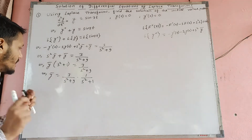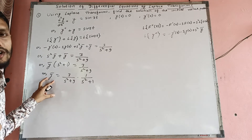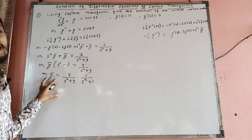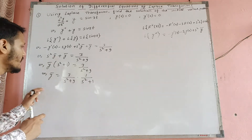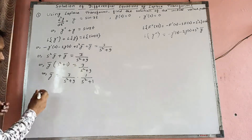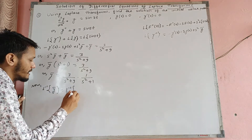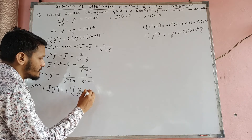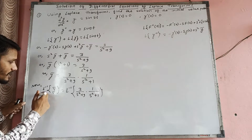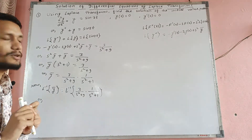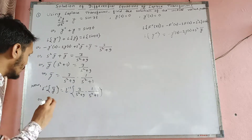So this is the y-bar. Oh, I see. Inverse Laplace transform of F(s) diyeko cha, so taking inverse Laplace transform on both sides. Inverse Laplace transform of y-bar le y dincha, kinaki inverse Laplace transform of F(s) is F(t), so F(t) is y.